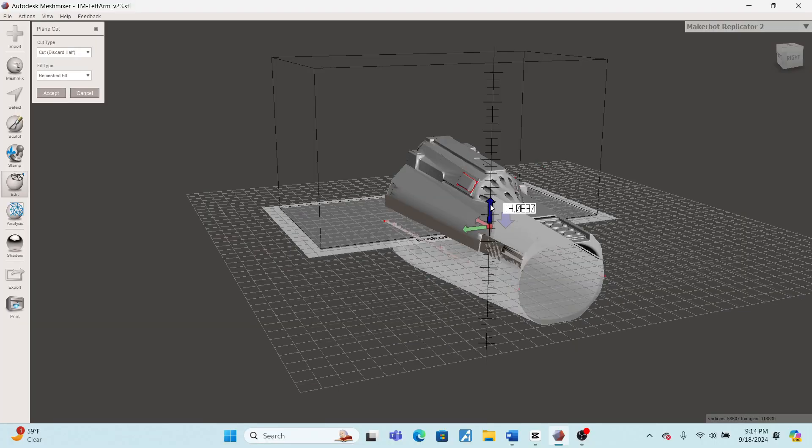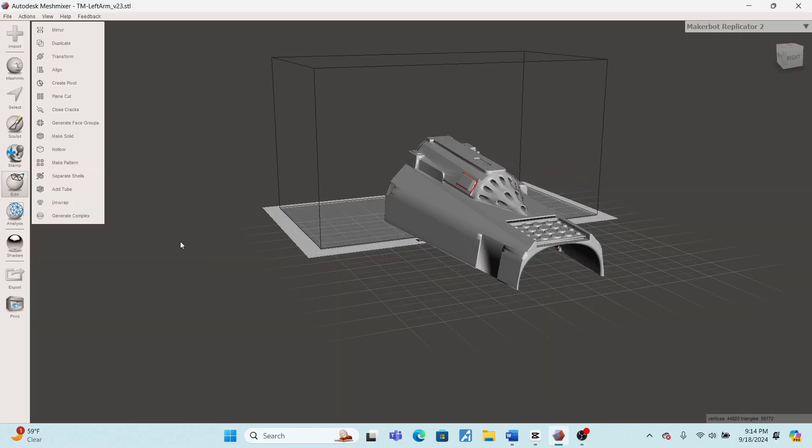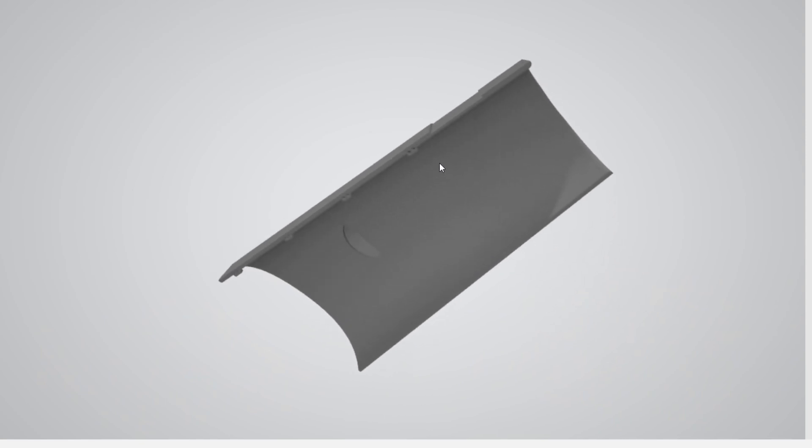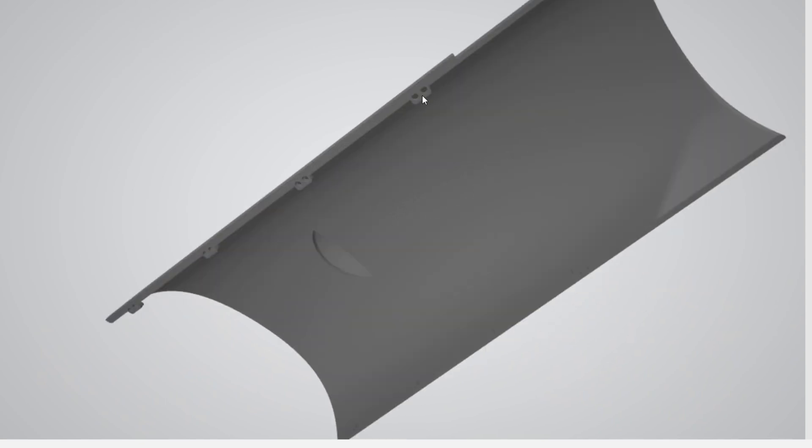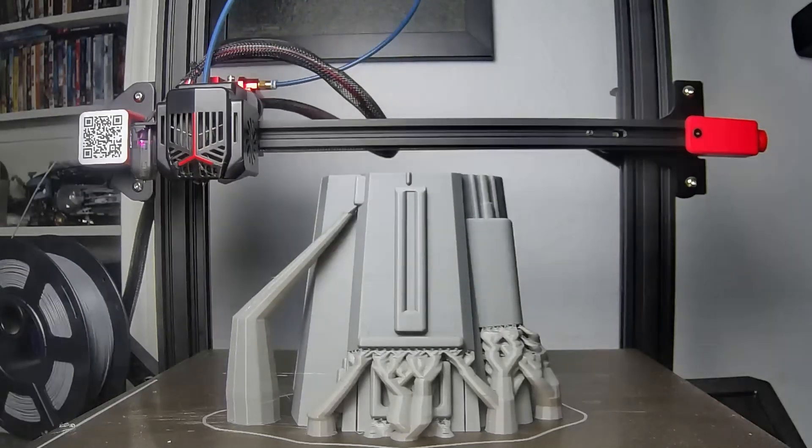I used Mesh Mixer to easily splice them in the middle. These parts have holes here that I can use to connect the two halves later. Now I'm ready to start printing.